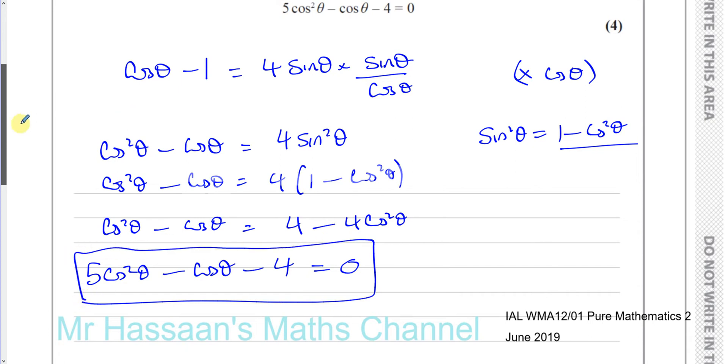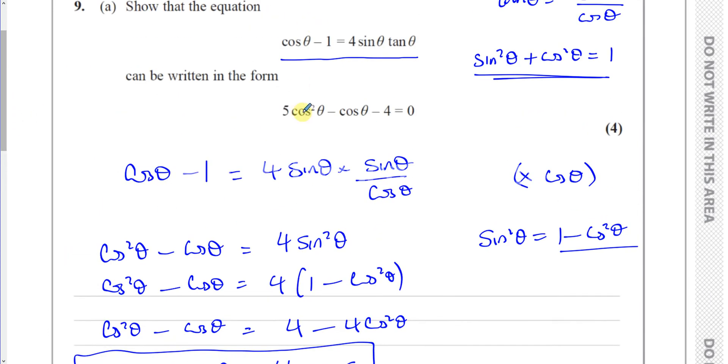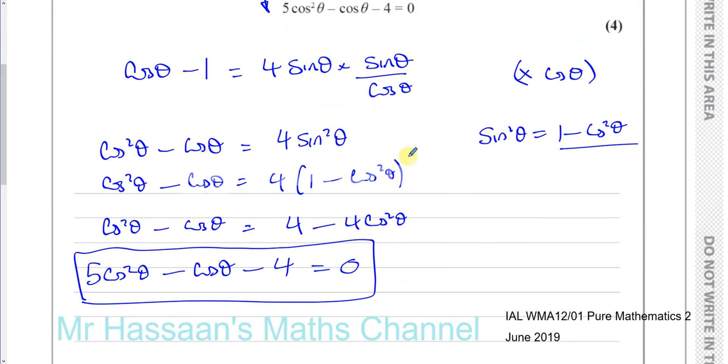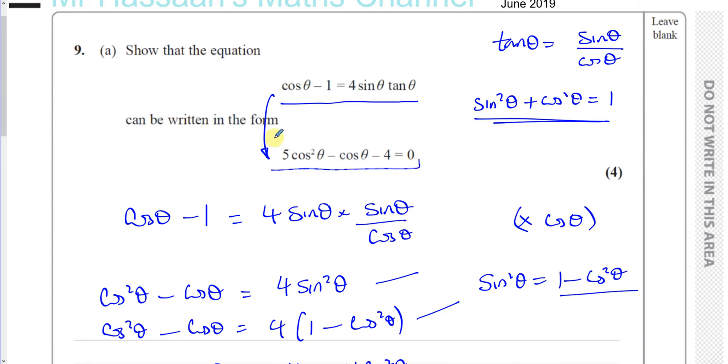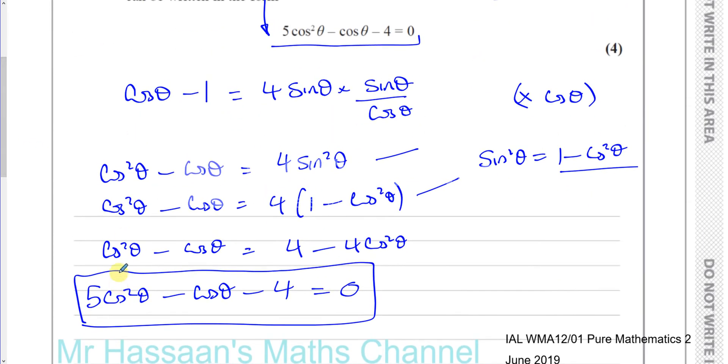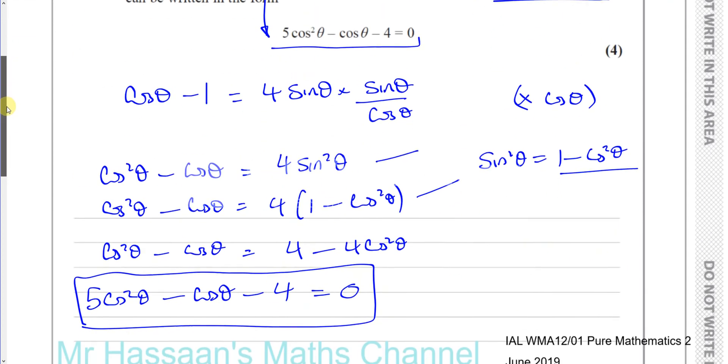Now an important point here is when they ask you to show something can become something else like this, you have to be very clear in your steps. For example, you can't just go from here to the answer, or from here to the answer. You should show the steps which lead you to the answer clearly and fully. So don't try to skip steps, especially when they ask you to show something. Show the steps clearly. So that's part A of question number 9.